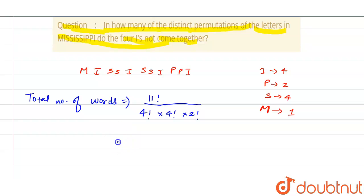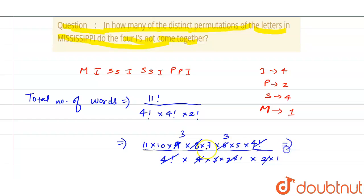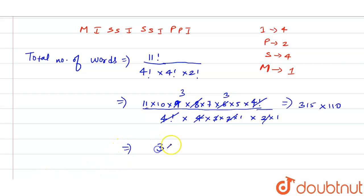Solving: 11! = 11 × 10 × 9 × 8 × 7 × 6 × 5 × 4!. The 4! in the numerator and denominator cancel. Then 9÷3, 8÷(4×2), and 6÷3 simplify, giving 3 × 3 × 35 × 110 = 9 × 35 × 110 = 315 × 110 = 34,650 total arrangements.